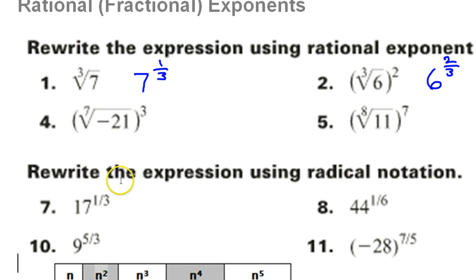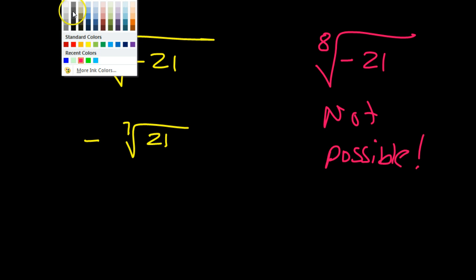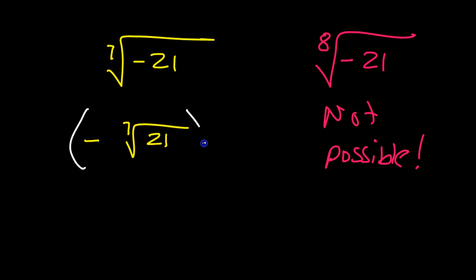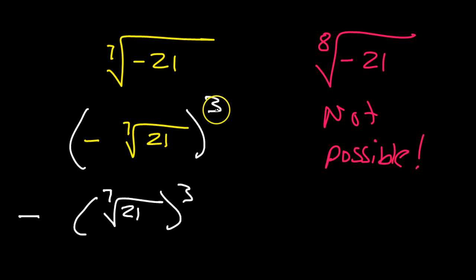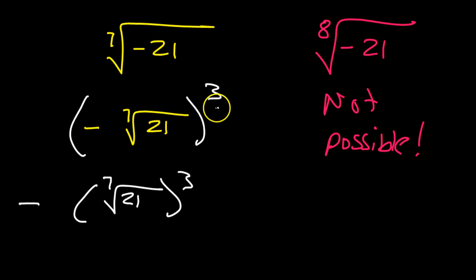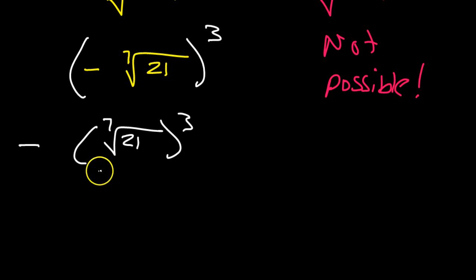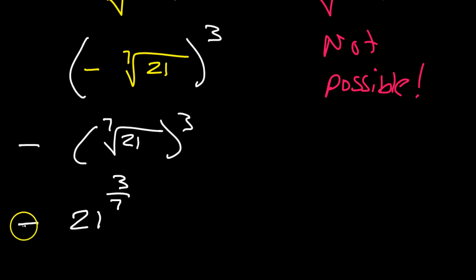We also have the 3rd power. If you have an odd root or an odd power, that negative is not going anywhere. So I can bring that negative out front and deal with the 7th root of 21 to the 3rd power. If it had been an even power, the negative would go away. With odd root and odd power, the negative just comes outside of it all. This will be 21 to the 3/7 power — negative survives.